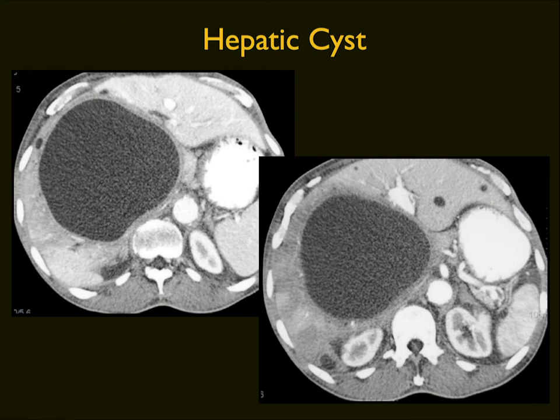Most of the time, cysts do not cause perfusion changes even when large. But if a cyst is located centrally and pushes on the IVC or near the takeoff of hepatic veins, you can have issues. A large cyst that had been drained multiple times can show concerning mass effect based on location — you might worry about a cystic tumor if you didn't know better. You can see what looks like questionable wall thickening, plus perfusion changes in the right lobe of the liver, but that can be seen with hepatic cysts.